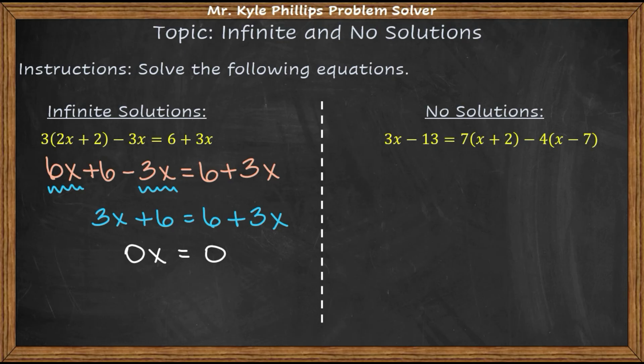Here's what it looks like if I have no solution. So I have 3x minus 13. 7 times x is 7x. 7 times 2 is 14 minus 4x plus 28. Now don't forget that negative sign. That negative 4 goes with the negative 4x. I see a lot of students forgetting that double distribution.